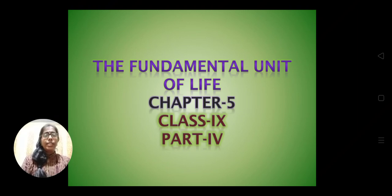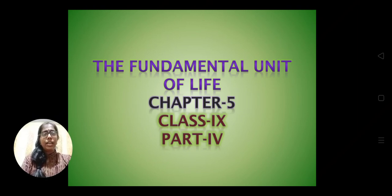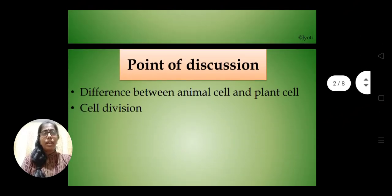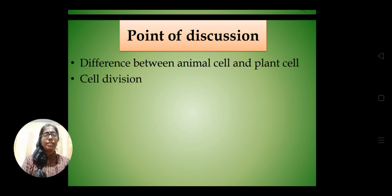Hello students. This is Part 4 of the Fundamental Unit of Life, Chapter 5, Class 9, and this is the last part. We have already discussed the different compartments of the cell, eukaryotic cell, prokaryotic cell, and the structure and function of different cell organelles present in the cell. Now in this last part, we will discuss the differences between the animal cell and plant cell, and then a little bit of cell division.